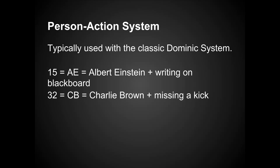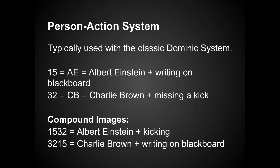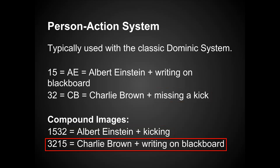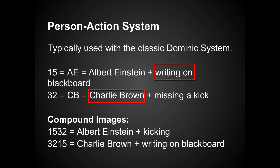The next method of placing images is called the person action system, typically used with the classic Dominic system. You'd have 100 persons from 00 to 99, and you'd give each of them a unique action. So 15 would be Albert Einstein, and his action would be writing on a blackboard. 32 might be Charlie Brown, and his action would be missing a kick — he's trying to kick the football and he falls over. So you can take any four-digit number and split it into compound images. For 1532, you would take the person from 15 and the action from 32 — Albert Einstein plus missing the kick. If you saw 3215, you'd take the person from 32, Charlie Brown, and the action from 15, writing on a blackboard. This lets you put four digits per location in your memory palace.